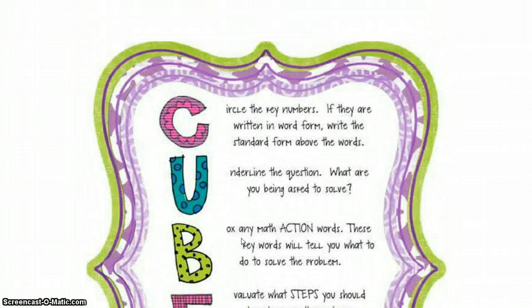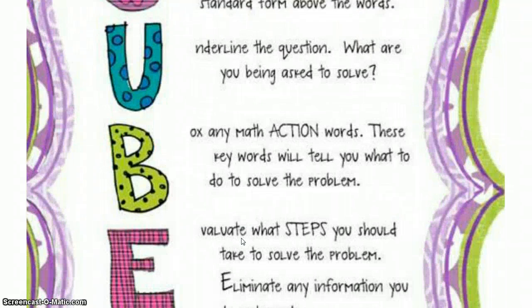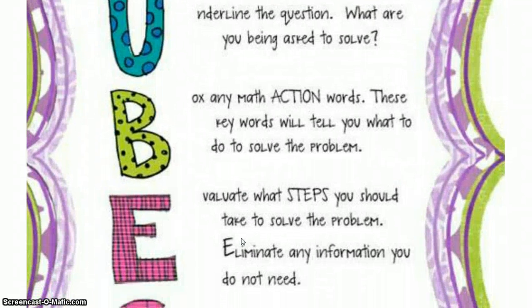Our first step is C, and that stands for circle the key numbers. If they are written in word form, write the standard form above the words. U — underline the question. What are you being asked to solve? B — box any math action words. These key words will tell you what to do to solve the problem.